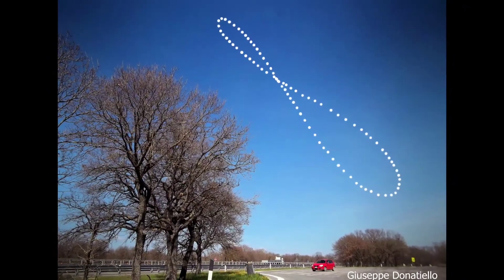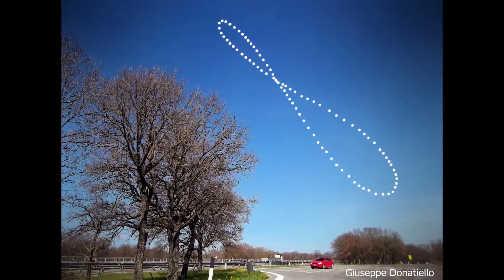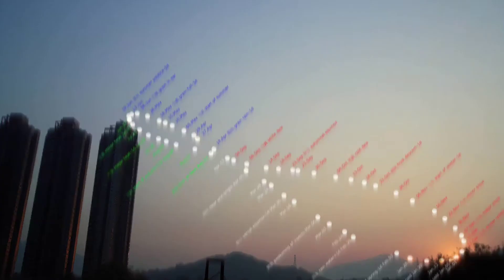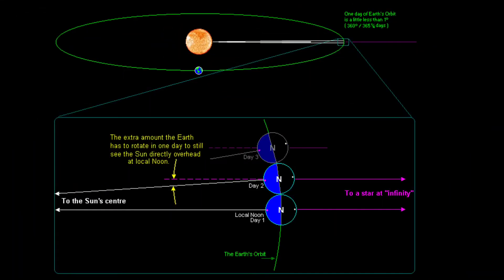A solar analemma is a graph or plot that shows the position of the sun in the sky at a single location at the same time of day throughout the year. The rotation of the earth is not exactly 24 hours — in total it's 23 hours, 56 minutes, and 4 seconds, which means one rotation doesn't bring it back to the exact position every day.